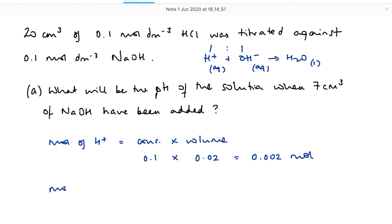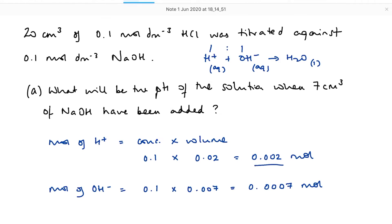How many moles of hydroxide ions did I add? Moles of hydroxide ions equals concentration times volume. Concentration of the sodium hydroxide was 0.1, and the volume was seven centimetres cubed, so that's 0.007 decimetres cubed, giving 0.0007 moles. So I can see now that neutralisation hasn't happened — my hydrogen ions are in excess.